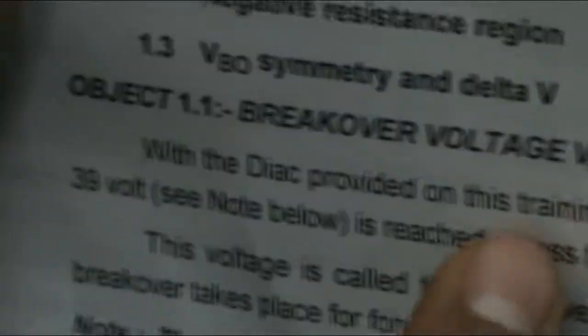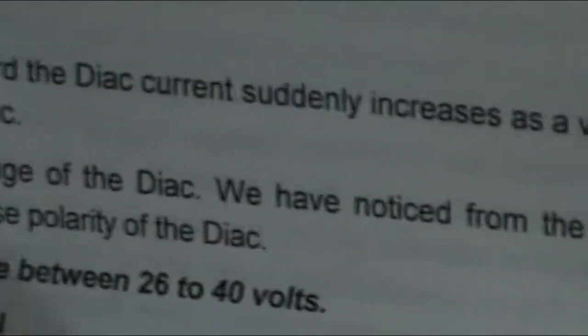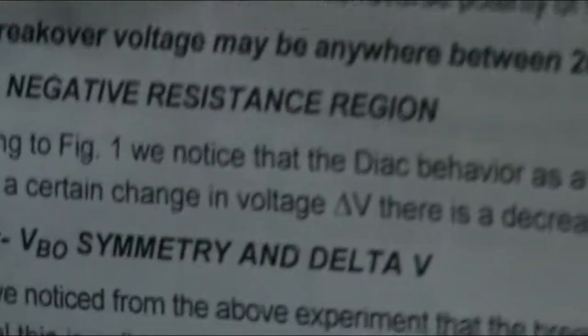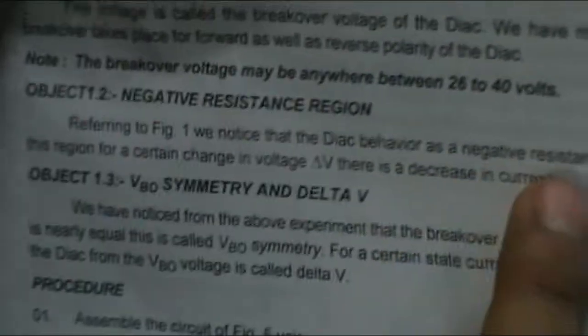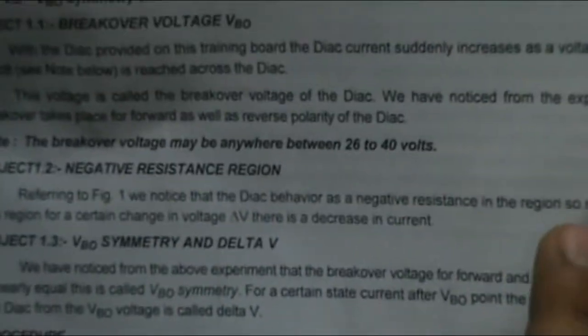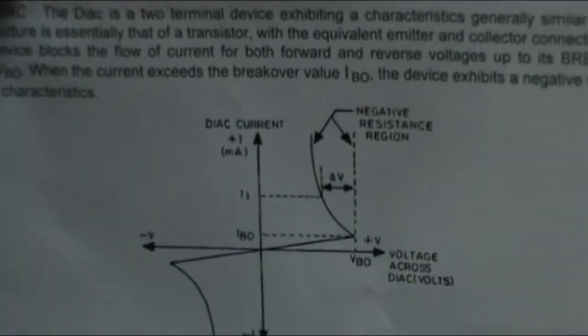The break over voltage VBO: as the current suddenly increases when the voltage is around 39 volts and as it reaches the break over voltage, the current tends to decrease. The Diac behavior has a negative resistance in the region so mentioned, as referenced in figure 1 in the manual — the Diac behaves as a negative resistance region there.